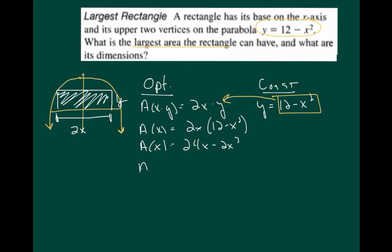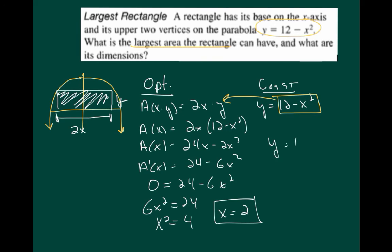And so when we take the derivative, we get 24 minus 6x squared. Okay, so we set that equal to 0. And let's solve for x. So 6x squared equals 24. That means x squared equals 4. So x equals positive or negative 2. So if x equals 2, then we plug in for y. y equals 12 minus 2 squared. So y is going to equal 8. Okay, so those are my two values.